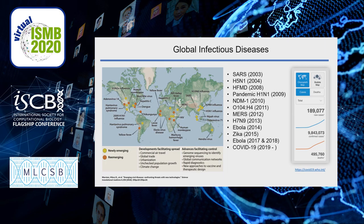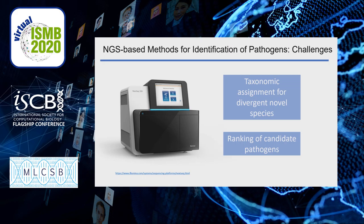From SARS in 2003 to COVID-19, different global infectious diseases emerge or re-emerge frequently in recent years. COVID-19, which is caused by SARS-CoV-2, has caused around 10 million confirmed infections. These infectious diseases were caused by different pathogens, and the identification of pathogens is very important. AGS-based methods provide a fast and accurate way to identify these pathogens.